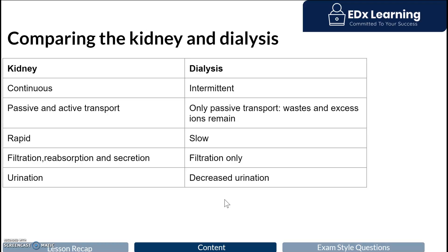The first important thing to know is that the kidney is always functioning — urine is always being produced. Compare that to dialysis: you only get filtration when you are on dialysis, which is five-hour, three-times-a-week sessions on hemodialysis, or the overnight sessions on peritoneal dialysis.